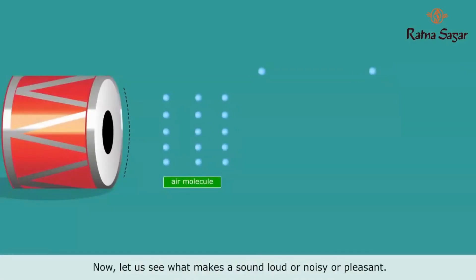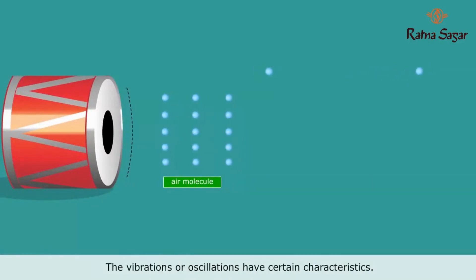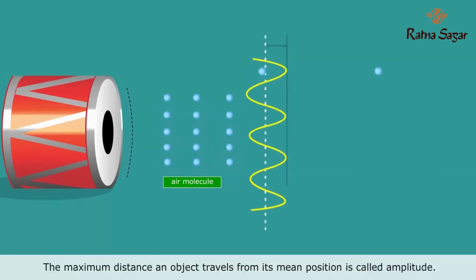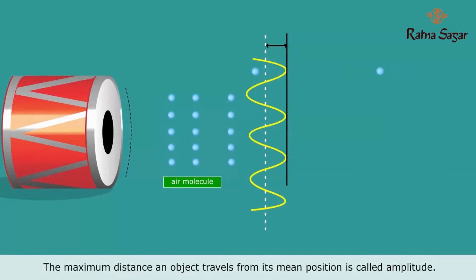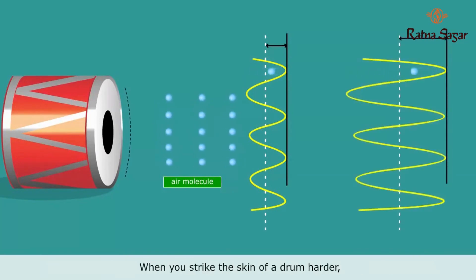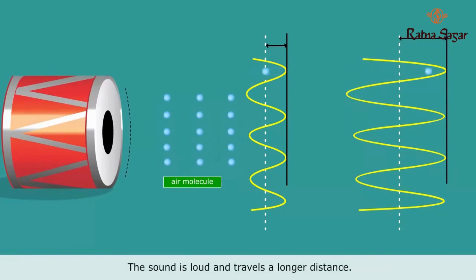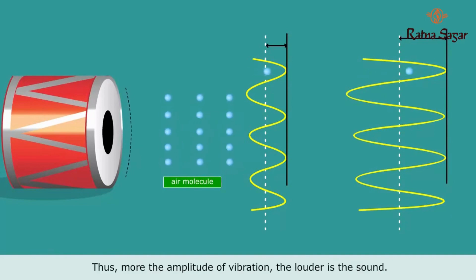Now, let us see what makes a sound loud or noisy or pleasant. The vibrations or oscillations have certain characteristics. The maximum distance an object travels from its mean position is called amplitude. When you strike the skin of a drum harder, the more the distance the skin moves about the mean position. The sound is loud and travels a longer distance. Thus, the more the amplitude of vibration, the louder is the sound.